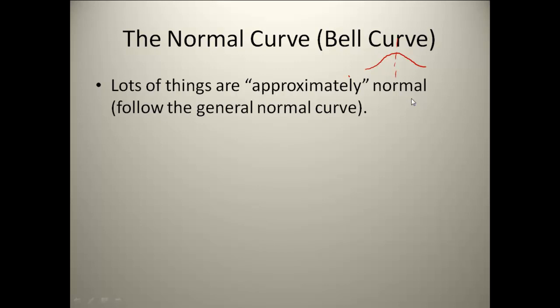There are a lot of things in nature that will fit a normal curve — things like people's resting heart rates, IQ scores, shoe sizes. Things like that will generally fit a normal curve if you look at the population.